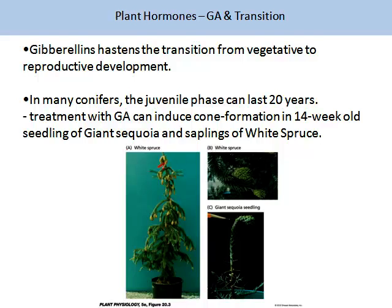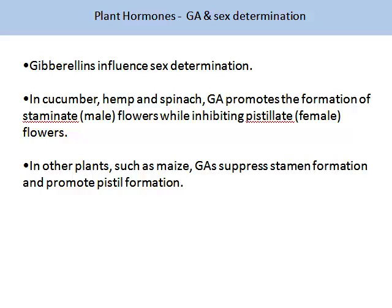Gibberellins have a role in the transition from vegetative to reproductive development — they speed it up. In many conifers, the juvenile or vegetative phase can last 20 years. Treatment with gibberellic acid can induce cone formation in 14-week-old seedlings of the giant sequoia and saplings of the white spruce. Gibberellins can also influence sex determination; in cucumber, hemp and spinach, GA promotes the formation of staminate male flowers while inhibiting pistillate female flowers. In maize, GA suppresses stamen formation and promotes pistil formation.